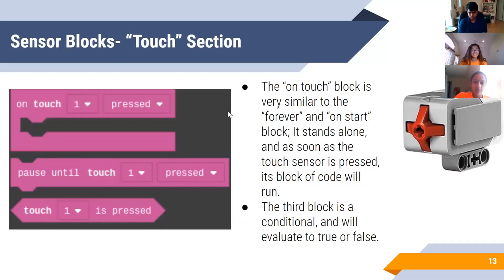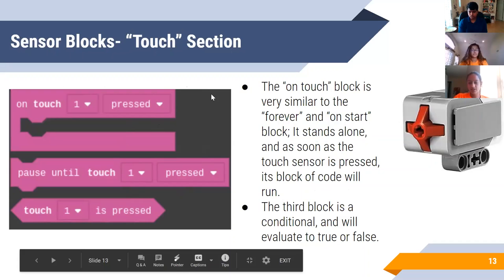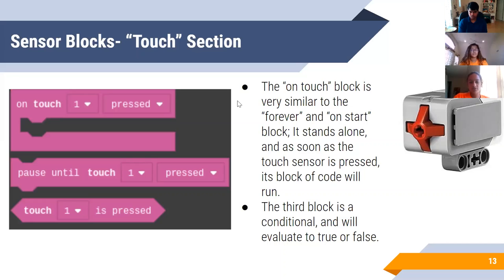The first sensor block we'll go over is the touch block. This touch sensor evaluates to true when the touch sensor is pressed in — it basically senses what is up against your robot. You can use this sensor for backing into walls, and there are many different actions you can configure with it. Since this is only an introduction to EV3, we won't go over all of them, but if you want to take a picture of this slide for extra information, feel free to do so.